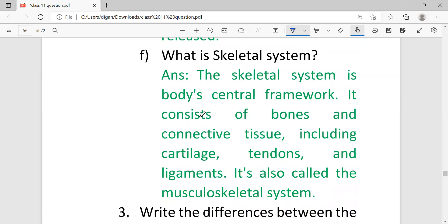What is skeletal system? The skeletal system is the body's central framework. It consists of bones and connective tissue including cartilage, tendons, and ligaments. It is also called the musculoskeletal system.